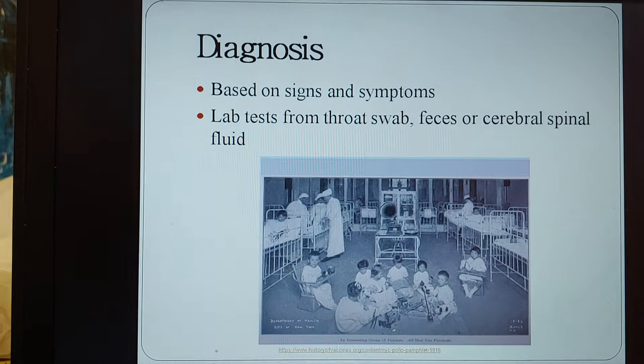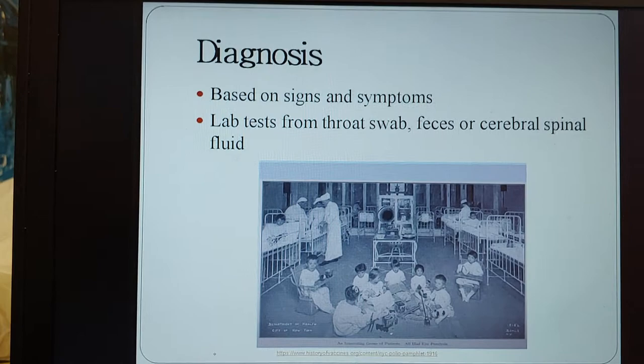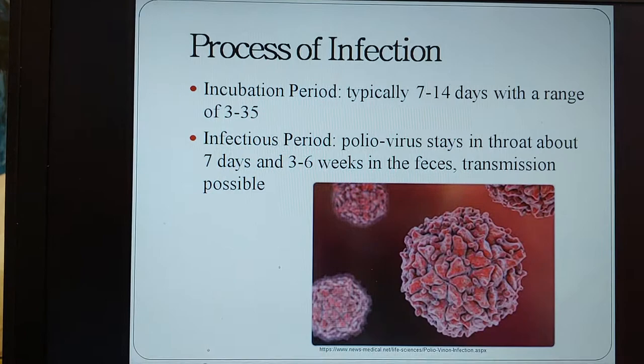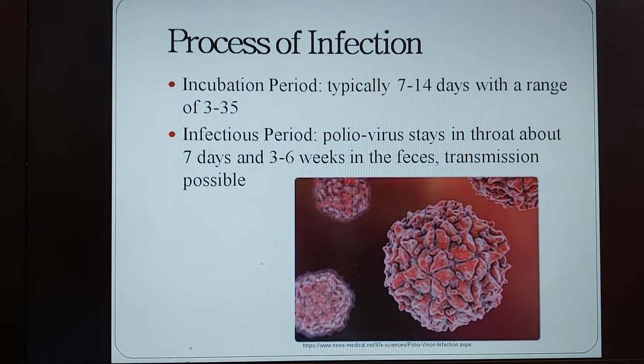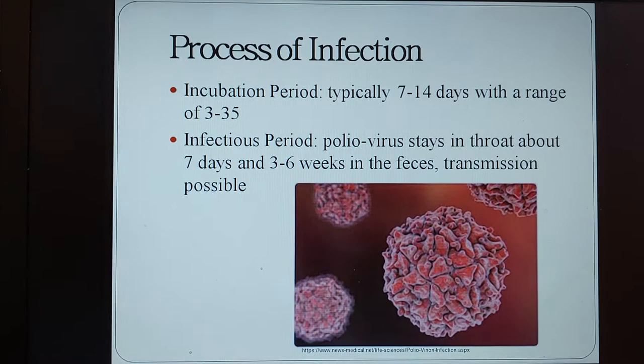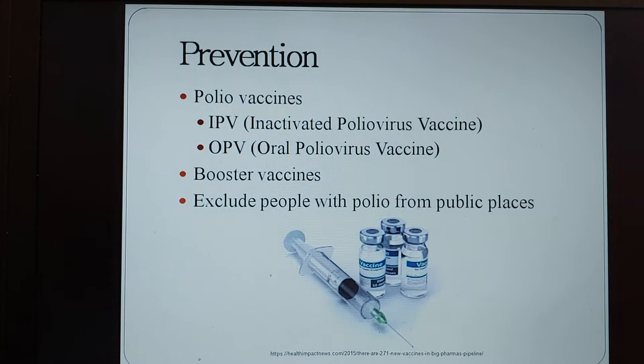Diagnosis is based on signs and symptoms, but given that some symptoms are flu-like it can be difficult, so lab tests are performed from throat swabs, feces, or cerebrospinal fluid. The incubation period is typically 7 to 14 days, with a range of 3 to 35 days. The poliovirus stays in the throat for about 7 days and 3 to 6 weeks in the feces, and transmission is possible throughout all of that time.